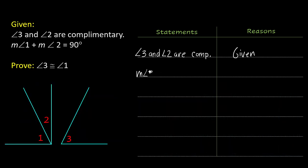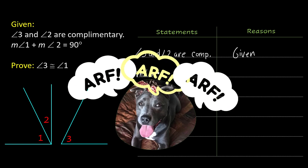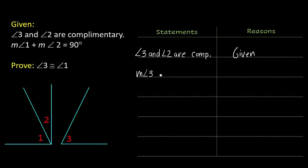That the measure of angle 3. All right let's go back. The measure of angle 3 plus the measure of angle 2 equals 90 degrees and I know that because that is the definition of complementary angles.